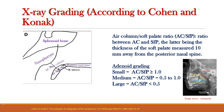For the X-ray grading, it is done according to Cohen and Konakh. In this slide you can see the sphenoid bone, nasopharynx, posterior nasal spine, soft palate, and the air column between the nasopharynx and soft palate. This grading is done based on the air column to soft palate ratio, and the soft palate measurement is taken approximately 10 millimeters away from the posterior nasal spine, as also shown in the X-ray on this slide.